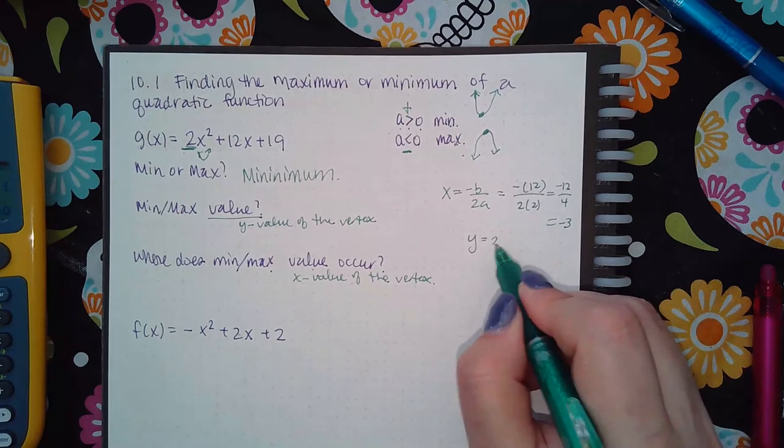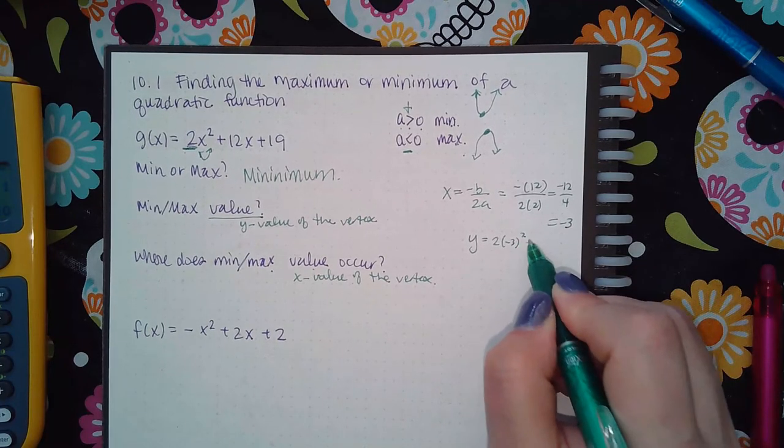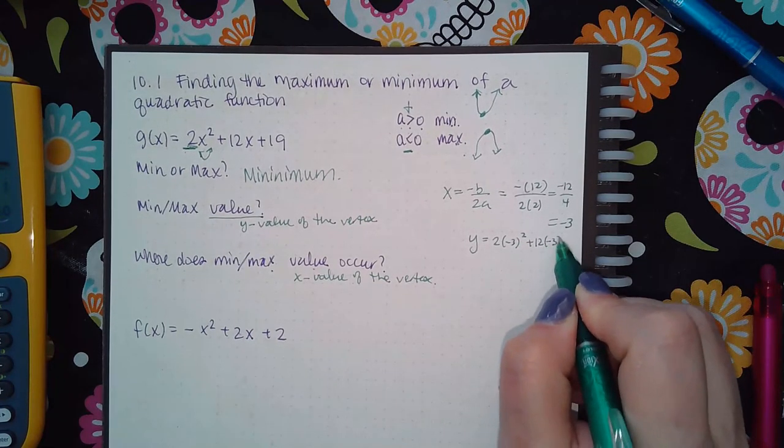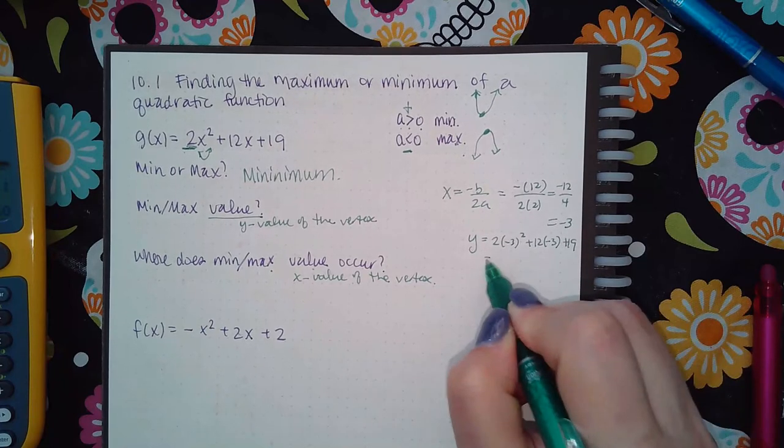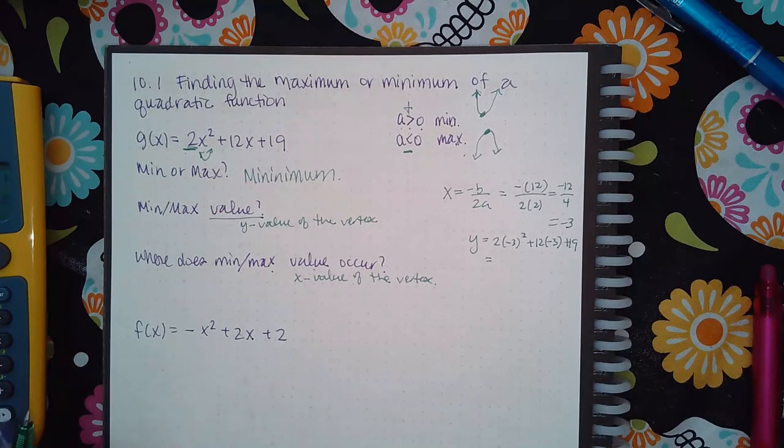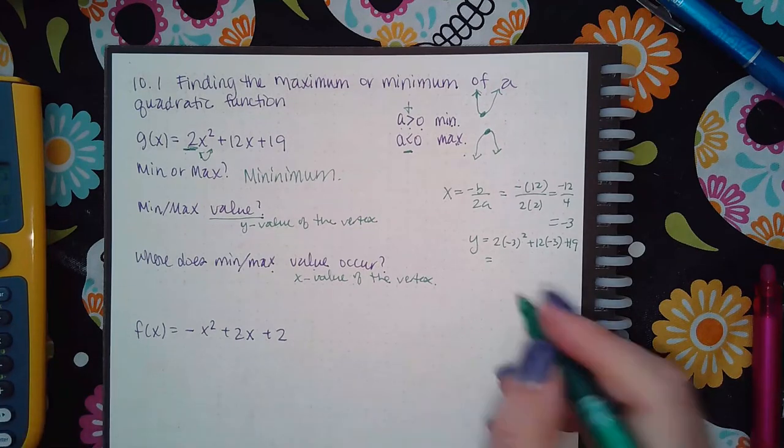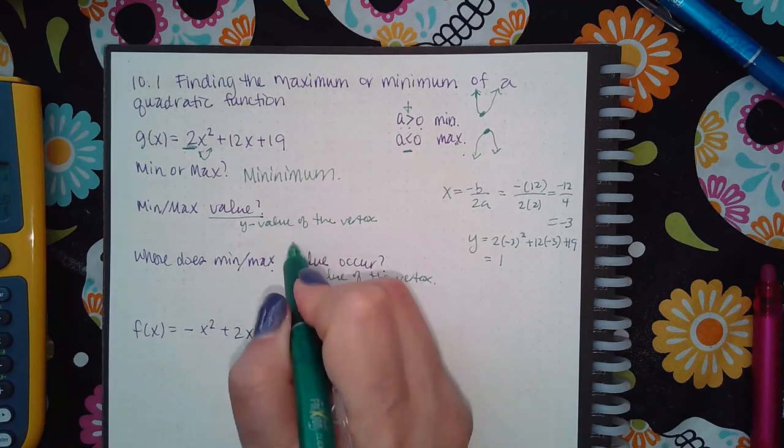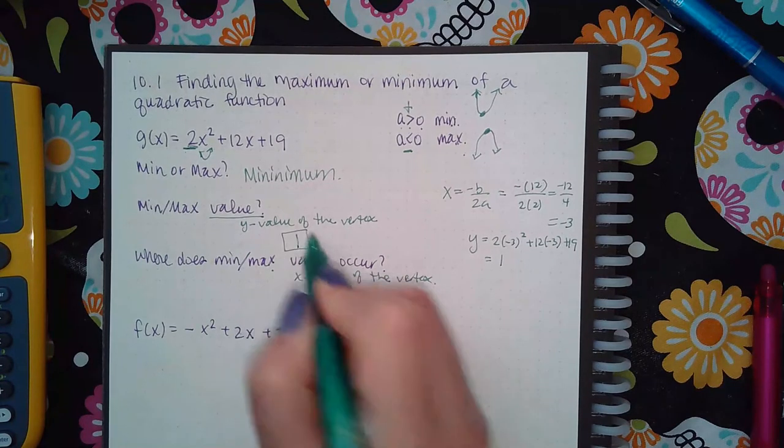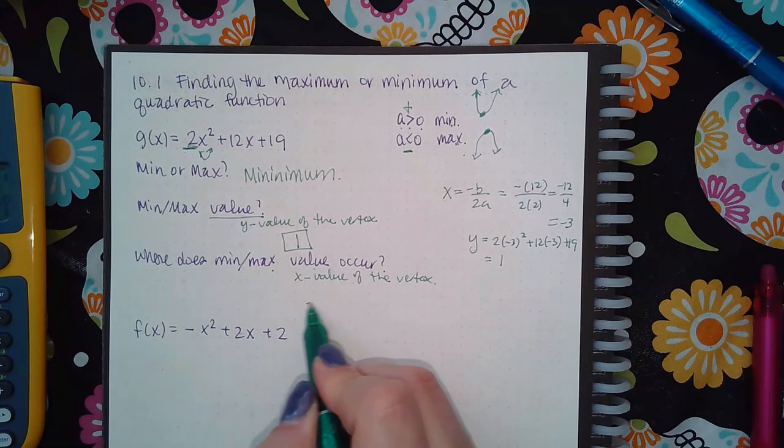If I want that y value, I have to do 2 times negative 3 squared plus 12 times negative 3 plus 19, which is actually equal to 1.